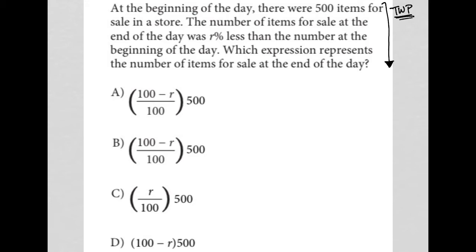The first sentence says that at the beginning of the day, there were 500 items for sale in the store. So I'm going to write down: beginning — we had 500 items.